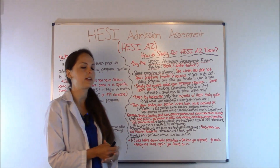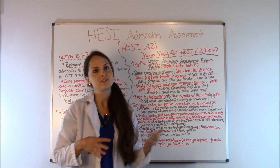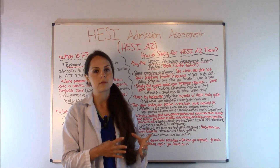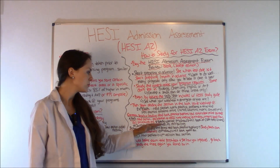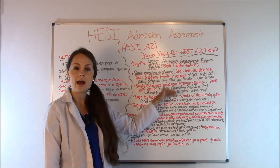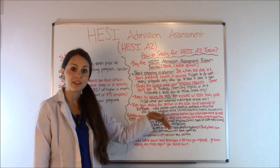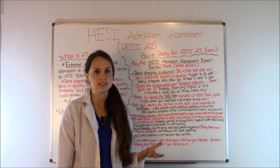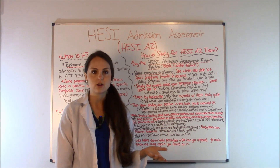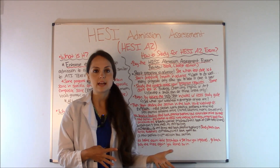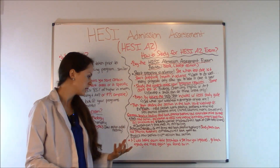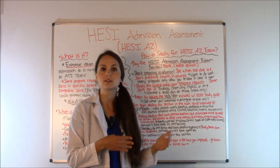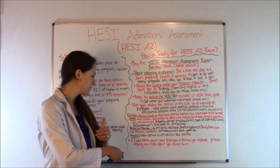For the biology and chemistry sections — it depends on the university, as this isn't a huge area where all programs test — if you do have to take it, use the same approach I've outlined for the other sections. Read the section in the book and take practice questions. Studystack.com is a great free site to help you with that, and the McGraw-Hill book is also good for those sections.